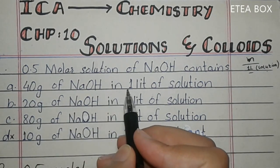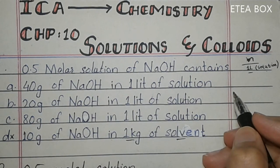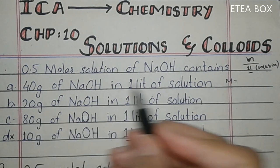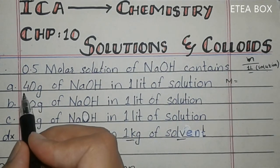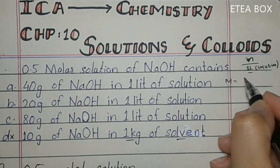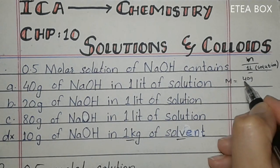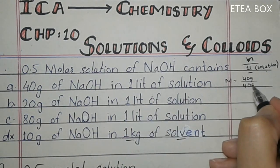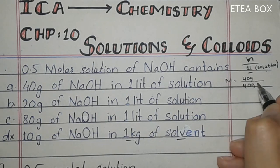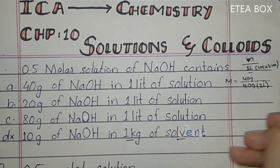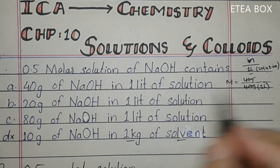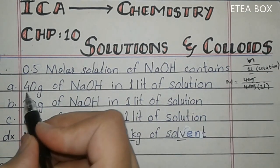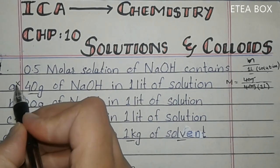Look at option A: 40 gram of NaOH in 1 liter of solution. Molarity is equal to number of moles per liter. First we find the number of moles: 40 gram divided by molar mass of NaOH which is 40 gram, divided by 1 liter. This gives 1 molar solution, not 0.5 molar. So option A is incorrect.